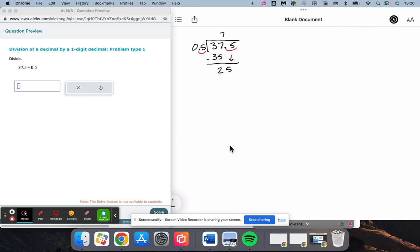5 goes into 25 five times. Now our decimal is located right here, and it's always going to come straight up, so we're going to end up with a whole number, 75 for this one.